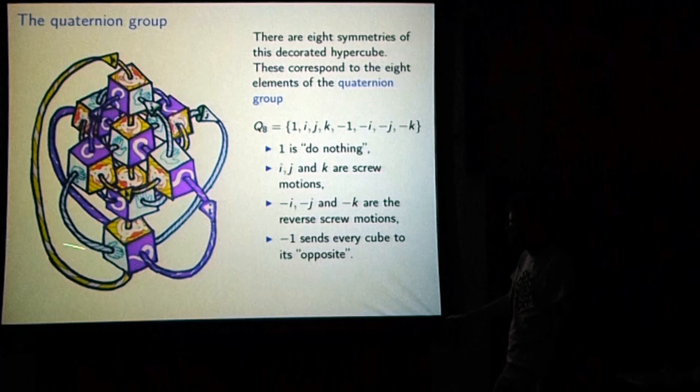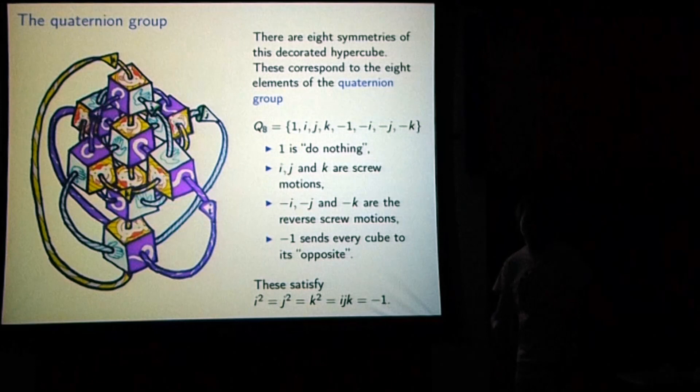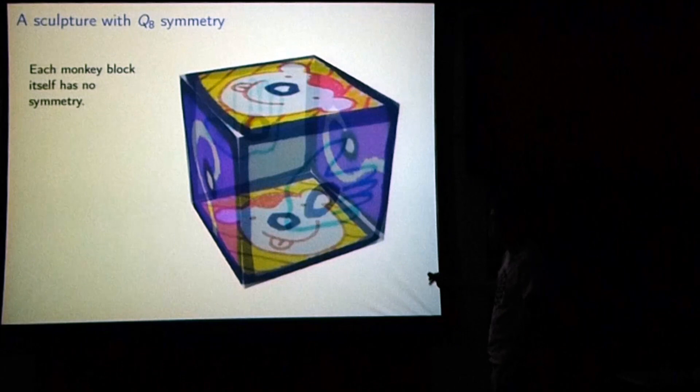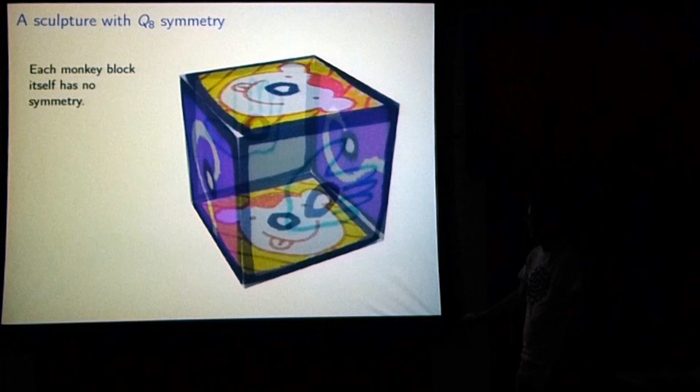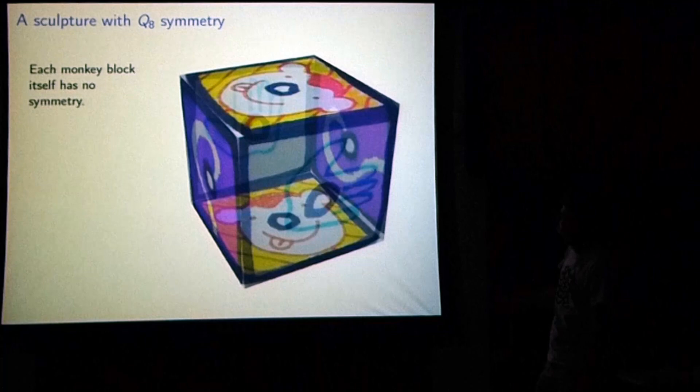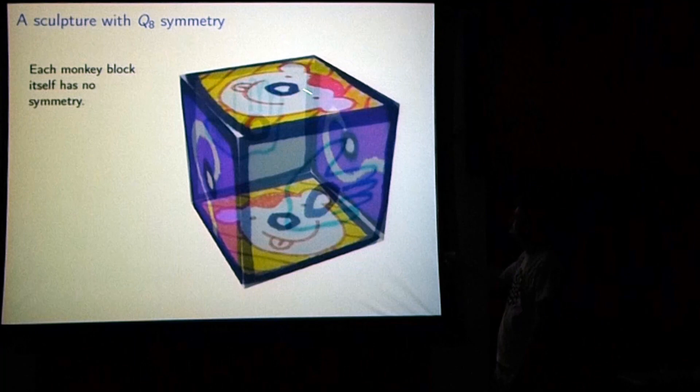We want to make a sculpture with this symmetry. Each monkey block itself has no symmetry: even though the top face and bottom face look the same, this is a tail face and that's a poor face and this is a face face — there's actually no way to rotate or reflect it to swap these faces. So this block has only the do-nothing symmetry.